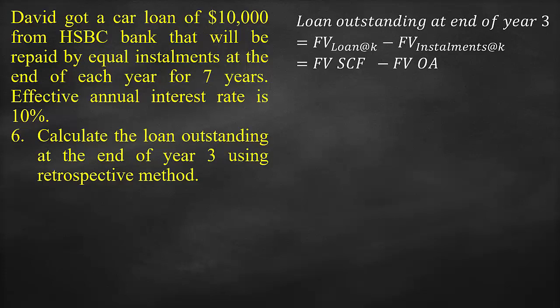The formula for the future value of the remaining unpaid installments equals the loan amount multiplied by (1 + interest rate) to the power of the number of paid periods, minus the periodic installments multiplied by [(1 + interest rate) to the power of the number of paid periods, minus 1], all divided by the interest rate.